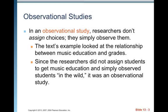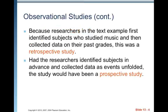Let's talk about observational studies first. In an observational study, researchers don't assign choices — they simply observe them. The text example looked at the relationship between music education and grades. Since researchers did not assign students to get music education and simply observed students, it was an observational study. Because researchers first identified subjects who studied music and then collected data on their past grades, this was a retrospective study because it was looking backwards.